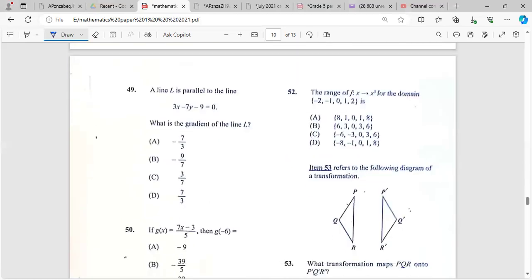A line L is parallel to the line 3x minus 7y minus 9 equals zero. What is the gradient of L? If they are parallel, they have the same gradient. So let's solve for y. We're going to get rid of this first: minus 7y equals negative 3x plus 9. Divide by negative 7. It's in the form y equals mx plus c now. The gradient will be 3 over 7. Both of them have the same gradient if they are parallel.